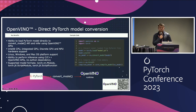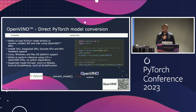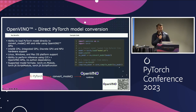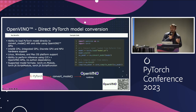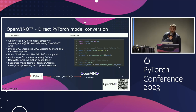OpenVINO also supports all major platforms: Linux, Windows, and macOS. One key benefit is the ability to perform inference using C or C++ OpenVINO APIs with no Python dependency — so if you prefer C++ development, you can use your PyTorch models with OpenVINO in C++ as well. The supported model formats in this flow are Torch NN modules, TorchScript modules, and TorchScript functions.